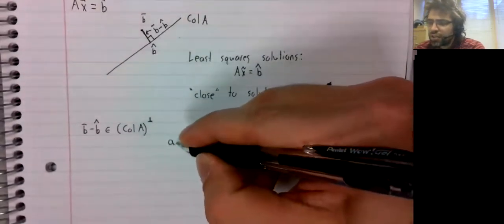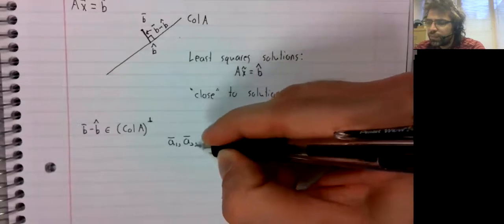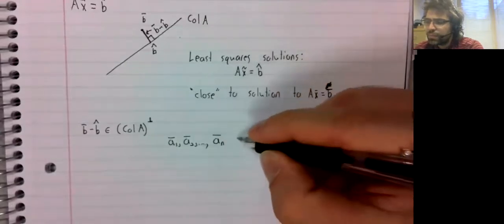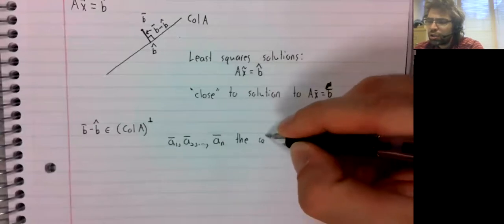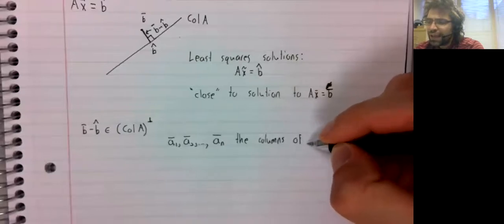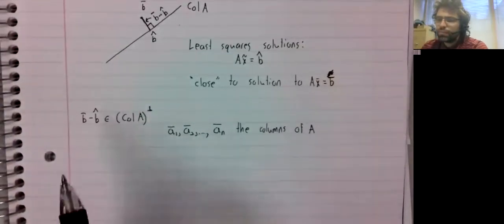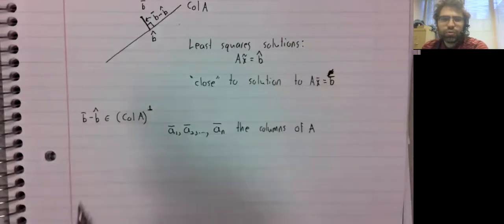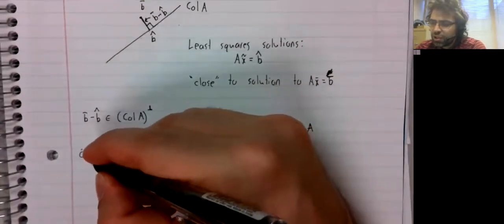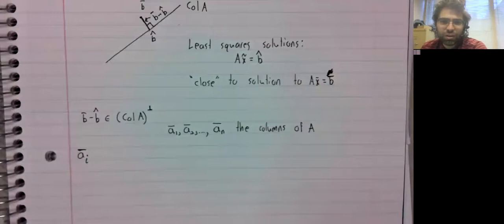So say that a1 up to an are the columns of A. Well, if this vector is orthogonal to the column space, it's certainly orthogonal to this spanning set of the column space.